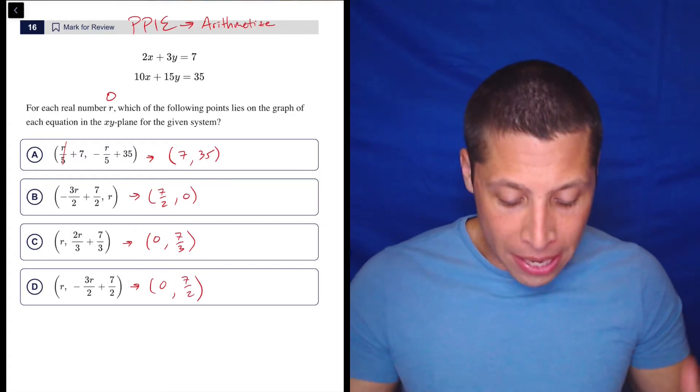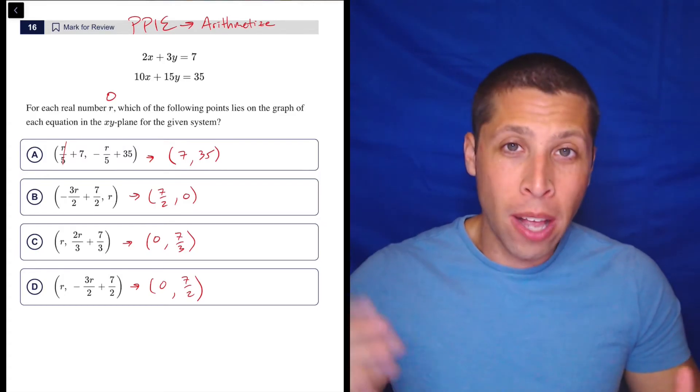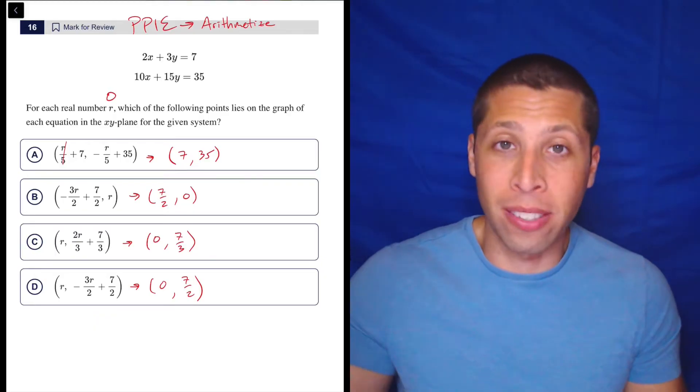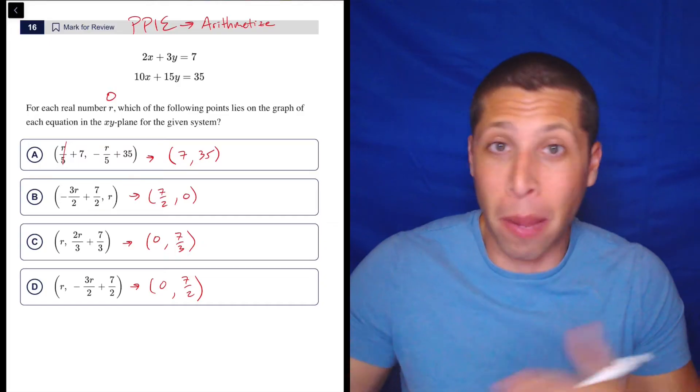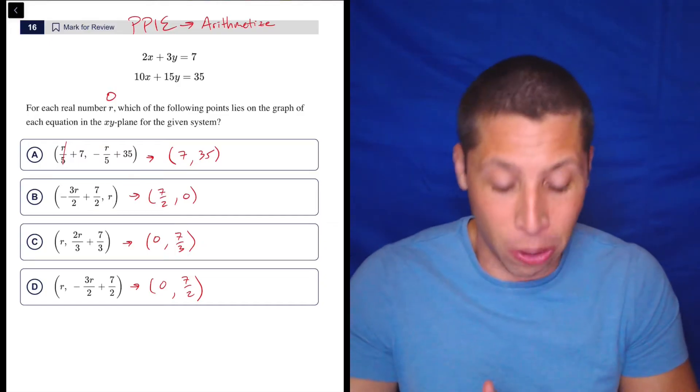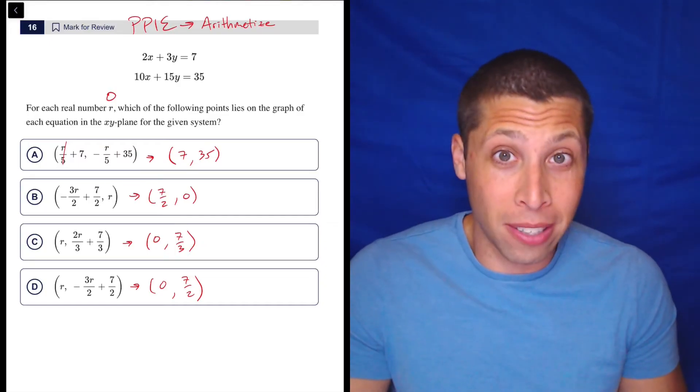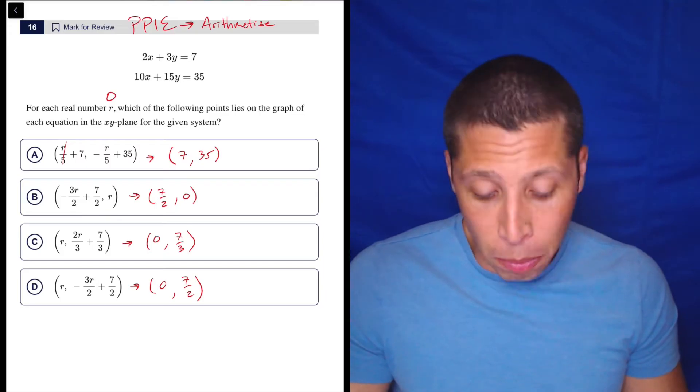Now, why am I able to do that so quickly? Because I can see how zero just knocks out anything with an R in it. It's going to multiply by zero, divide by another, but it's zero, so it all kind of goes away. So the benefit of zero is it's easy to think about. Now we can just plug those points in.